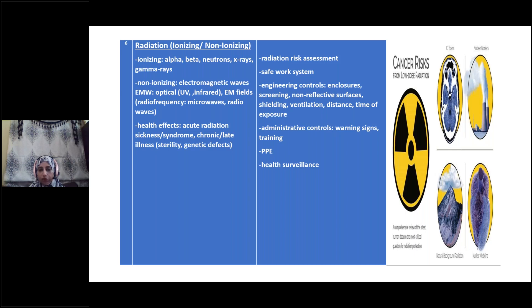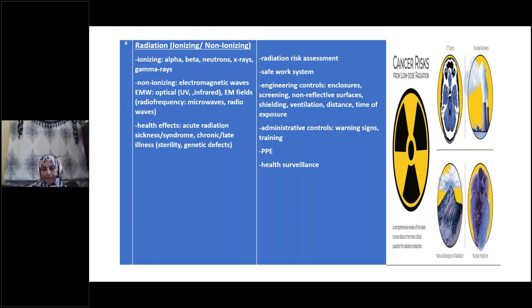Other control measures include administrative controls — using warning signals and doing proper training. Also, in certain areas, workers should wear their PPE. Health surveillance is also very important in this matter. Even the control of cell phones is important as they carry some level of radiation.